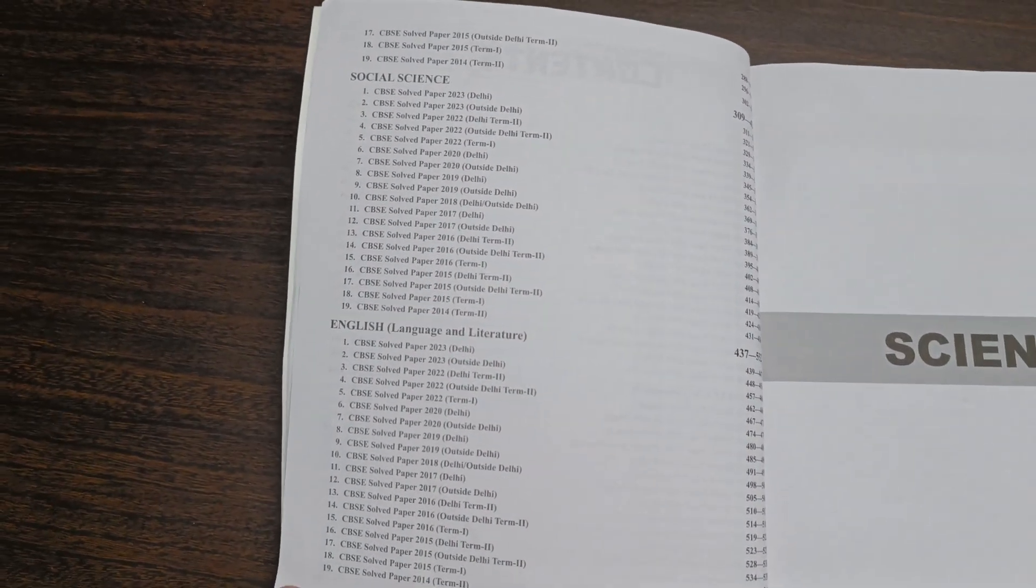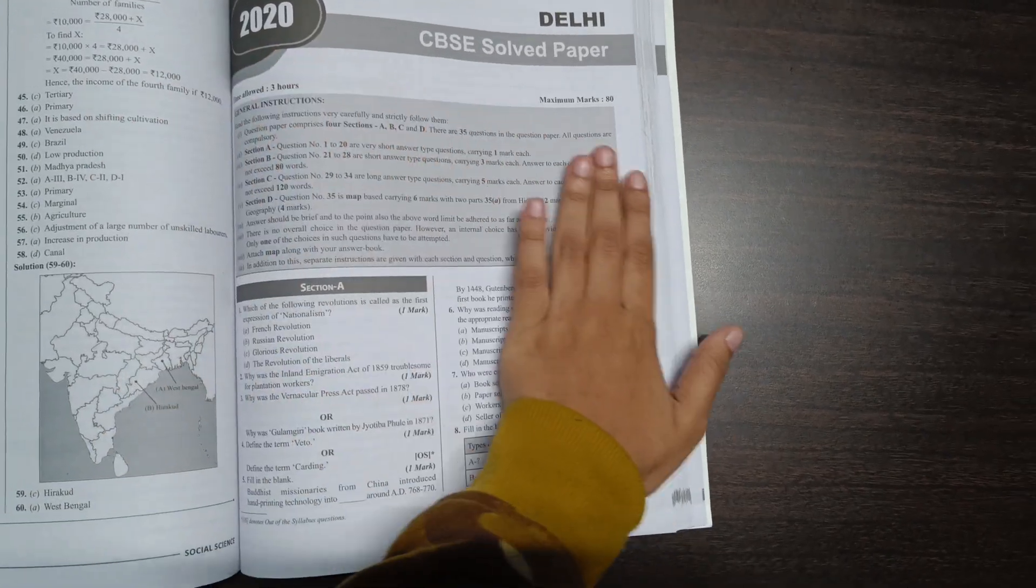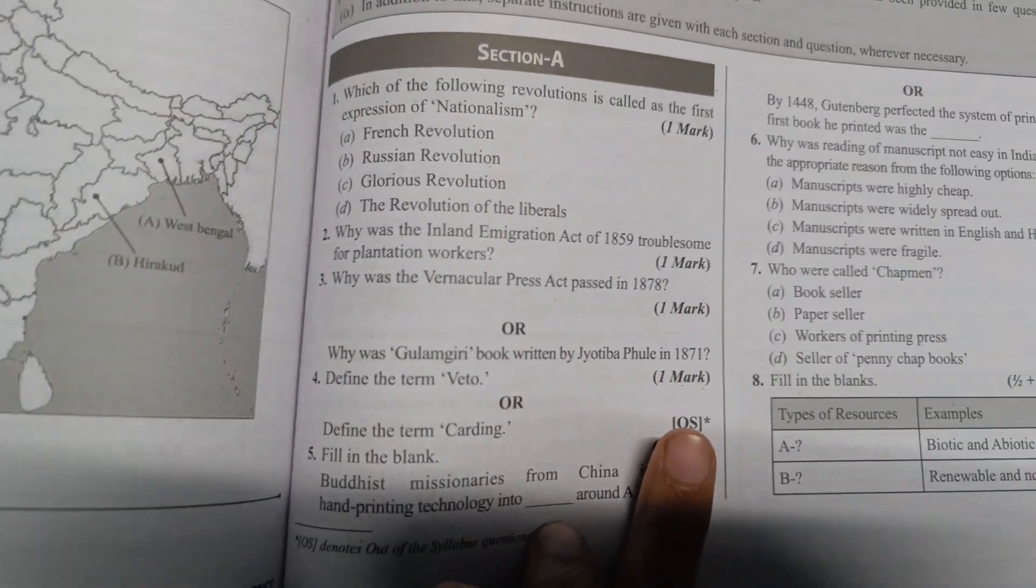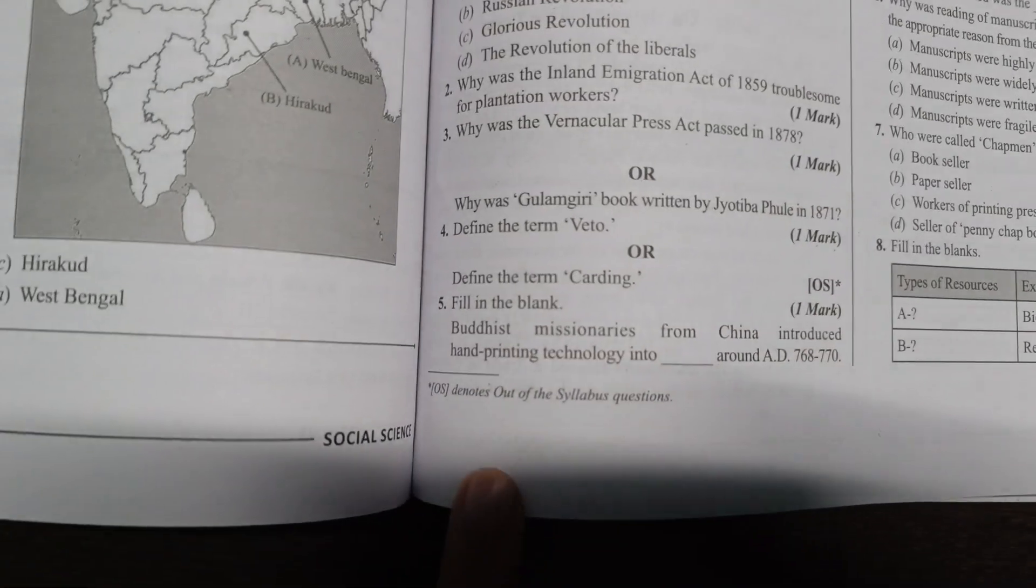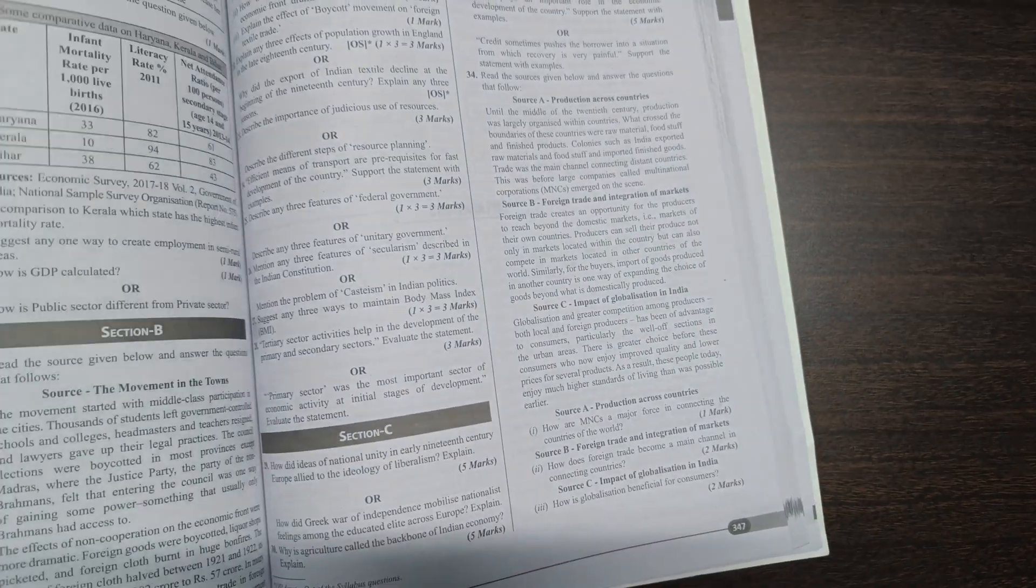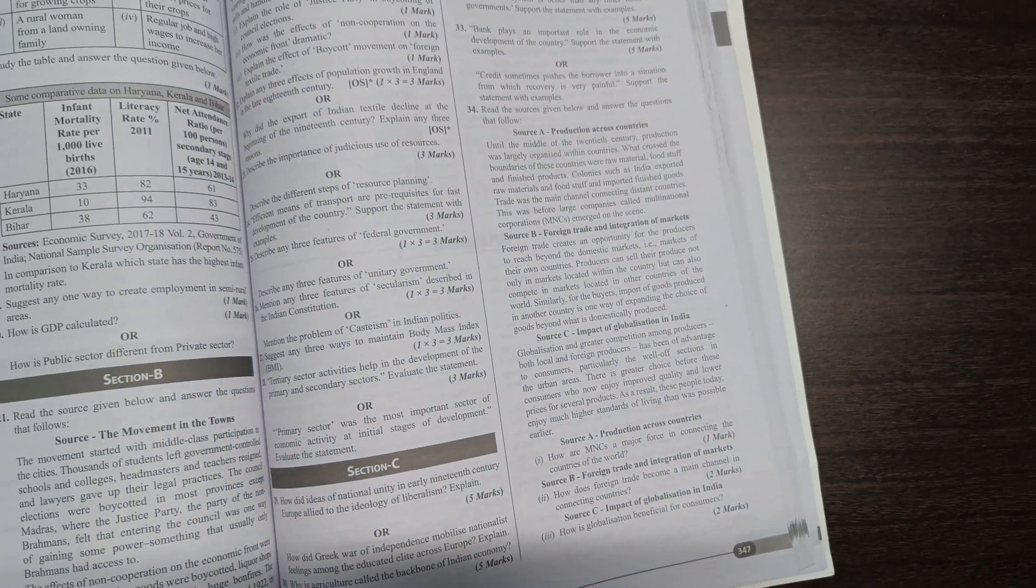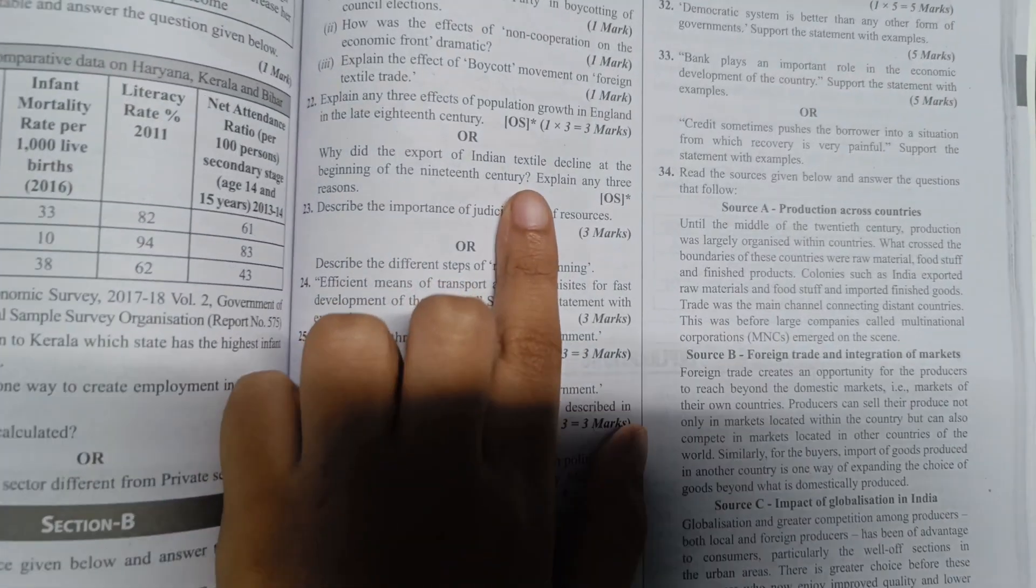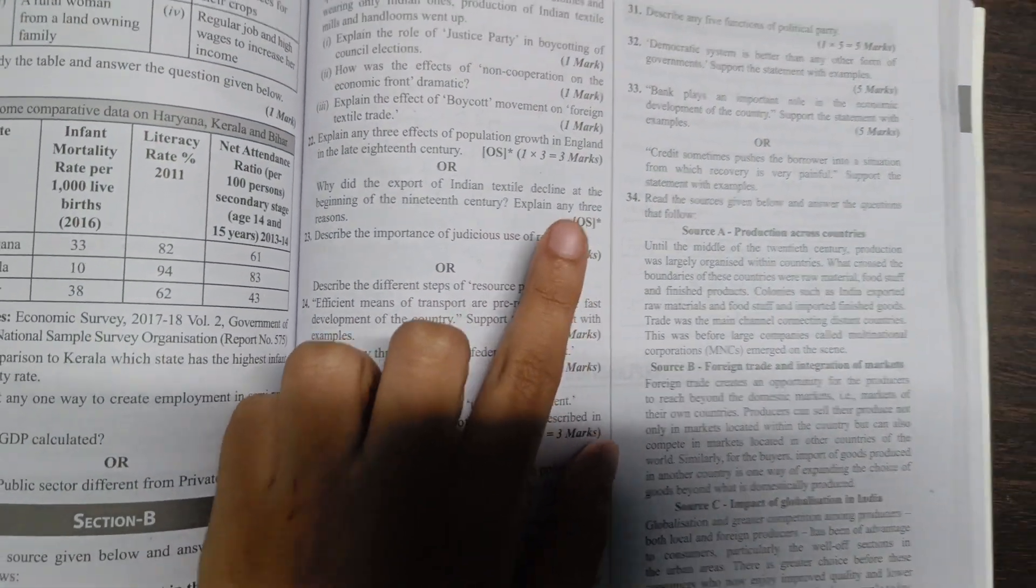Here you can see the contents of the book. It contains the subjects English, social science, mathematics standard and science in an arranged format. This is the question paper of Delhi, the subject social science from the year 2020. Here you can see that in some questions it is marked as OS and OS means those questions which are outside the syllabus.